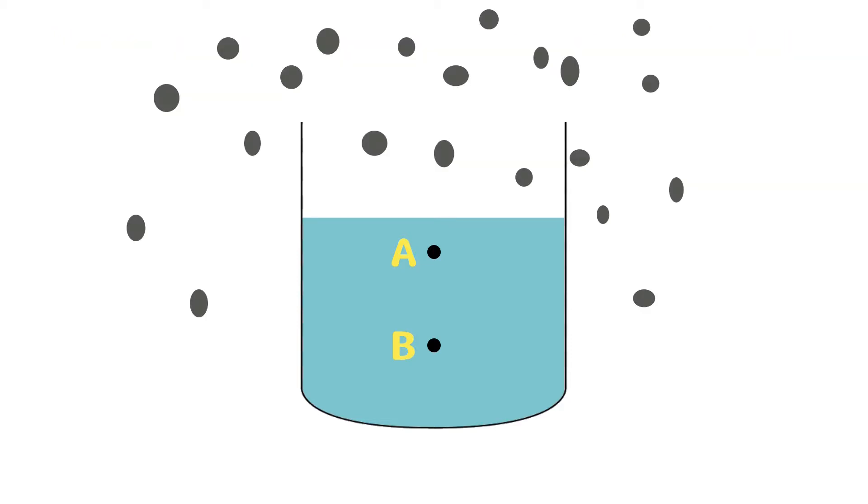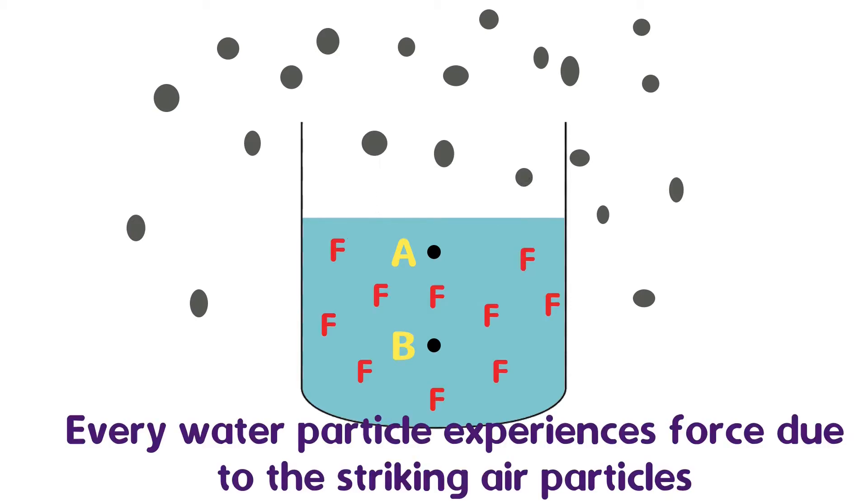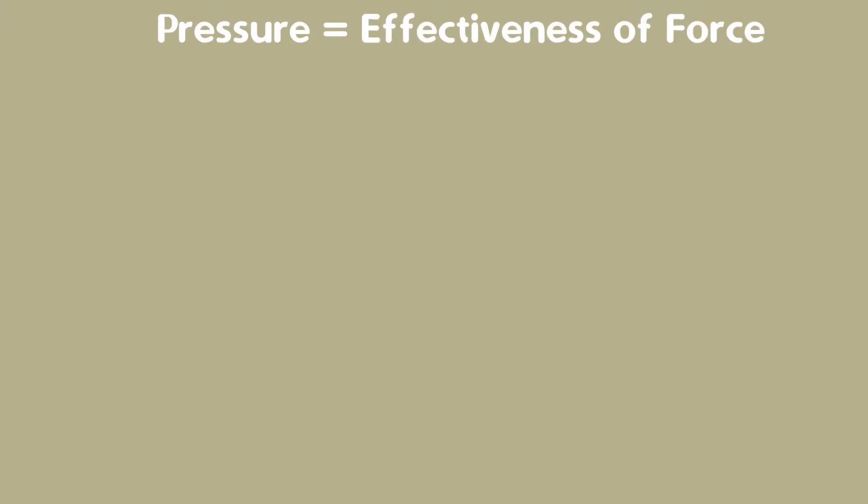In the air, air particles always move around randomly and continuously strike the water surface and thus exert some force. This force gets distributed to every point in the water. In other words, every water particle in the pot experiences the force exerted by air particles. We make use of the term pressure to represent the effectiveness of force on an area.